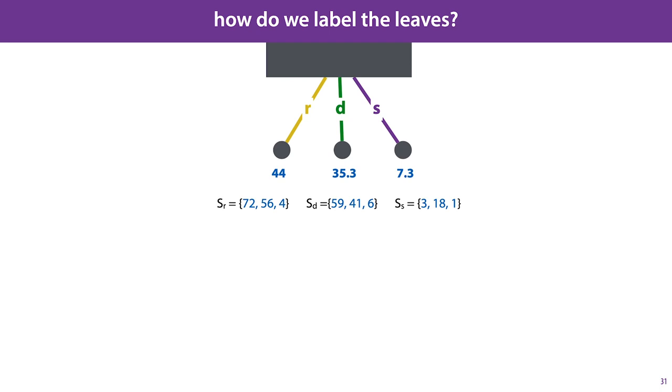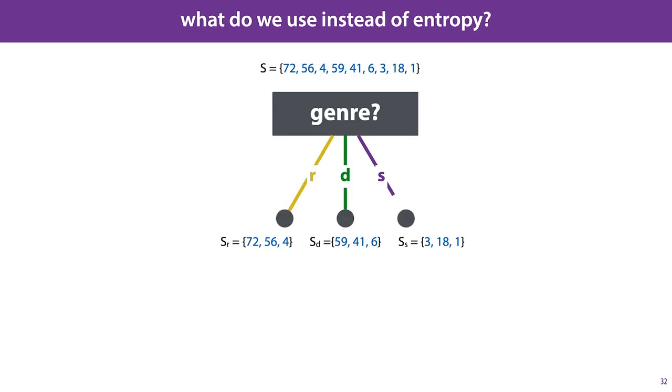The second question we need to answer is what measure we use to decide which split is preferable. We can't compute entropy over the target values in our subsets of the data, because most likely they'll all be different. However, variance measures a very similar property. The bigger the spread of the output labels, the less certain we are about what the value of the leaf node should be. The best split results in a large reduction of average variance over the created segments. So if we take our information gain measure from before and simply replace the entropies with variances, we end up with an information gain measure that we can apply to numerical target values.